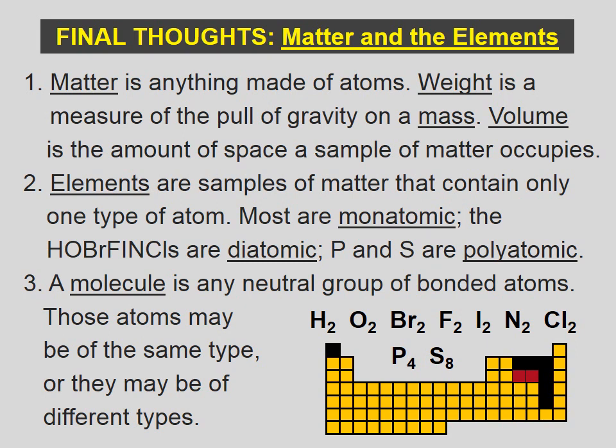Final thoughts on matter and the elements. Matter is anything made of atoms. Weight is a measure of the pull of gravity on a mass. Volume is the amount of space a sample of matter occupies. Elements are samples of matter that contain only one type of atom. Most are monatomic. The hoberfinkels are diatomic. Phosphorus and sulfur are polyatomic. A molecule is any group of bonded atoms. Those atoms may be of the same type, or they may be of different types.